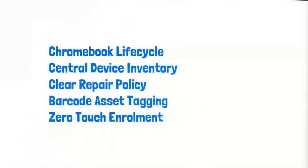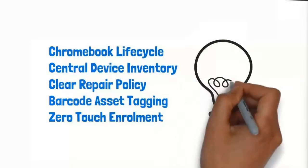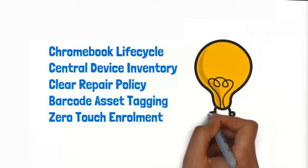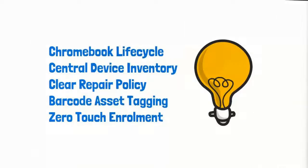So my five strategies and tips for Chromebook one-to-one management are: understand and map out your Chromebook lifecycle; keep an accurate central device inventory; have clear repair policies and procedures communicated to all stakeholders, particularly families; consider using asset tags rather than serial numbers when barcoding; and ask your Chromebook resellers about zero touch enrollment.